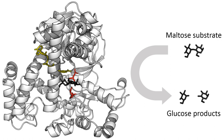At the diffusion limit, every collision of the enzyme with its substrate will result in catalysis, and the rate of product formation is not limited by the reaction rate but by the diffusion rate. Enzymes with this property are called catalytically perfect or kinetically perfect. Examples of such enzymes are triose phosphate isomerase, carbonic anhydrase, acetylcholinesterase, catalase, fumarase, beta-lactamase, and superoxide dismutase. The turnover of such enzymes can reach several million reactions per second.